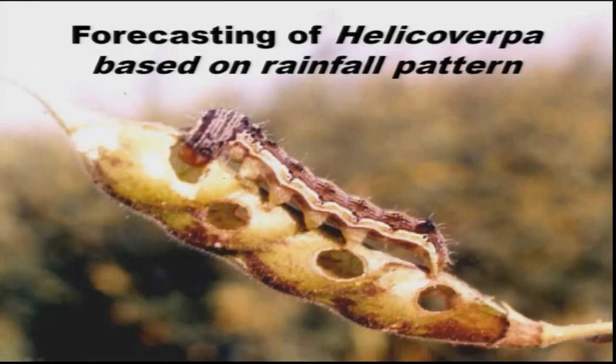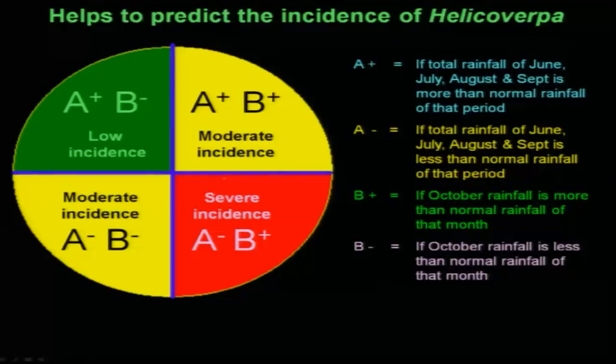For this particular insect, because of the coordination of various universities including University of Agricultural Sciences Raichur, ICRISAT located in Hyderabad, and the National Centre for Integrated Pest Management, we have developed a forecasting model using rainfall which is working very efficiently. You can see this graph which clearly indicates four quarters.